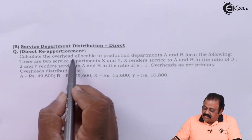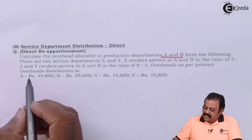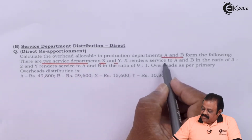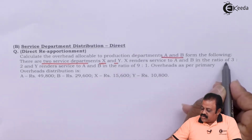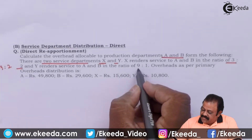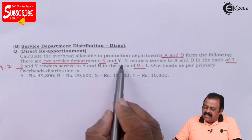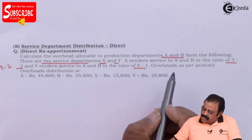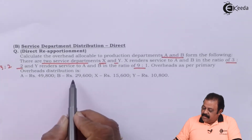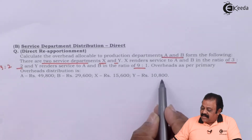Calculate the overhead allocable to production departments A and B from the following. There are two service departments X and Y. X renders service to A and B in the ratio of 3 to 2. Y renders service to A and B in the ratio of 9 to 1. A and B are the production departments, and X and Y are service departments. Overheads as per primary overhead distribution: Department A — 49,800; Department B — 29,600; Department X — 15,600; Department Y — 10,800.